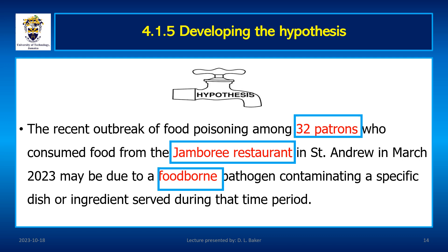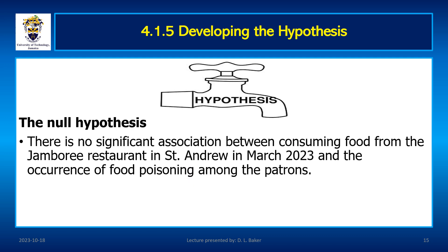With advances in biomedical sciences, it is prudent to include objective findings as well. Once you have developed a hypothesis, you test it to see whether or not it holds true. The hypothesis provides guidelines for the rest of the investigation to prove or disprove it. A case control study could be used, but you must remain objective. Developing an alternative hypothesis requires you to also consider a null hypothesis — in this case, that any observed clustering is due to random chance and that no specific food item, ingredient, or food handling practice contributed to the outbreak.